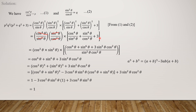Here we have sin²θ/cos²θ. After cross multiplication, we get cos⁶θ + sin⁶θ + 3sin²θcos²θ, all over sin²θcos²θ. Now the denominator and numerator will cancel.